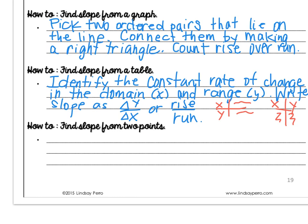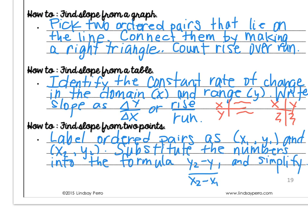Last, find the slope from two points. You're going to label your two ordered pairs as x1, y1, and x2, y2. You'll then substitute the numbers into the formula and simplify. Now one thing I want to point out, with the formula, this is just the change in y and the change in x, like we did every single time.